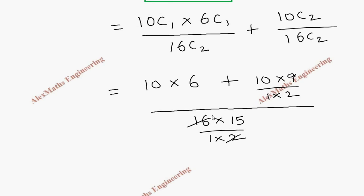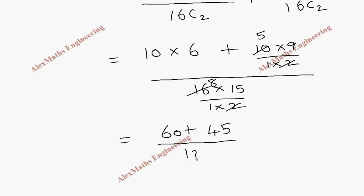Now we can cancel this - it is 8 times, we can cancel this - this is 5 times. Now 10 into 6 is 60, 9 into 5 is 45, whole divided by 15 into 8 which is 120.